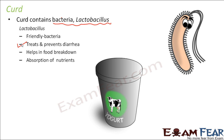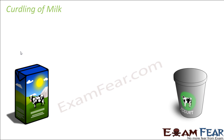Lactobacillus also helps in absorption of nutrients. Once the food is digested inside our body, the food is absorbed by different parts of the body, and that is how we get energy from food. So this bacteria, after getting inside our body, helps us in a number of ways. Now let us see how exactly the process of curdling takes place — that is, the conversion of milk into curd.